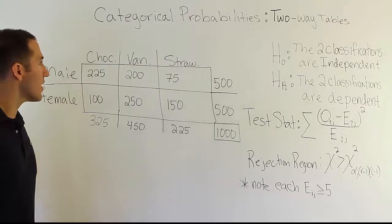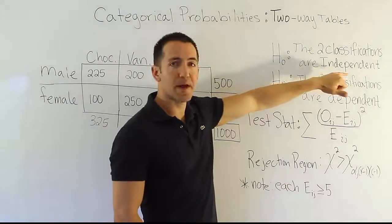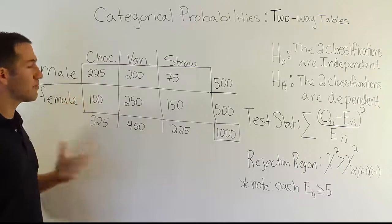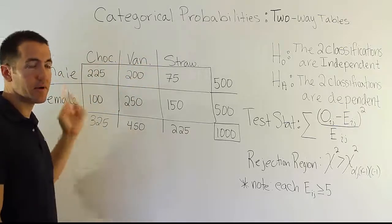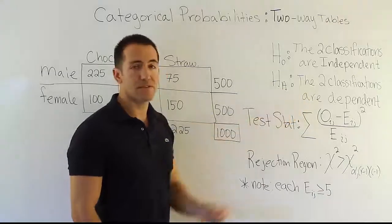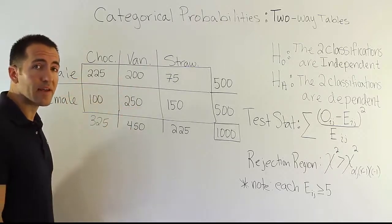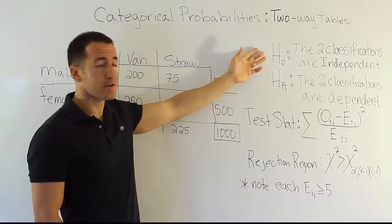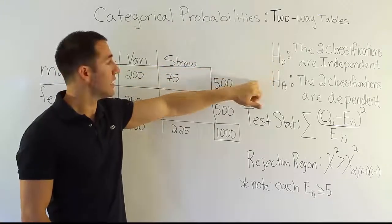The idea behind this study is to figure out — and this is what our H0 and HA are generically for all two-way table problems — whether the two classifications are independent. In this case, we're saying the choice of your favorite flavor among these three ice cream flavors is independent of your sex. The preferences among chocolate, vanilla, and strawberry would be consistent among both groups if independent. The alternative hypothesis is that the two classifications are dependent, meaning gender matters for ice cream preference.